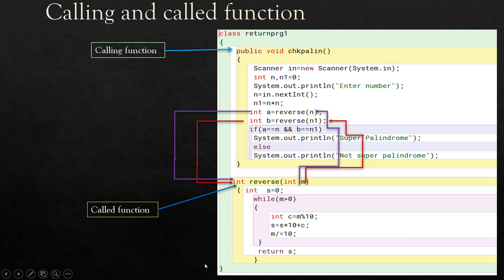Now let's understand calling and called functions. Here is a program where a function 'checkPalindrome' is created — it actually checks for a super palindrome — and we have also created another function 'reverse' with a return type of int. An integer value is input, and that value is passed to the reverse function as n. This value n then goes into the variable m inside the reverse function.